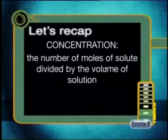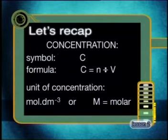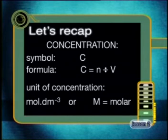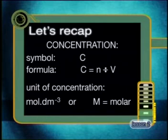I'm sure you managed those equations, but remember to practice when revising. These chemical equations are very useful. Chemists use this type of reaction to prepare salts or to calculate the concentration of an unknown solution. Concentration is defined as the number of moles of solute divided by the volume of solution. The symbol for concentration is capital C, and we use the formula C equals N divided by V. The units of concentration are mol·dm⁻³, or capital M, which stands for molar.